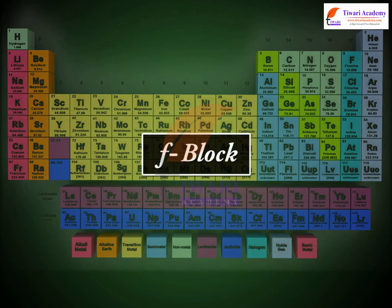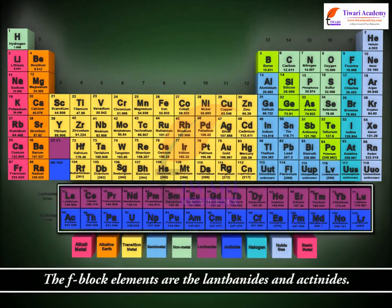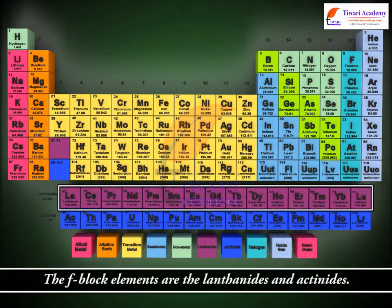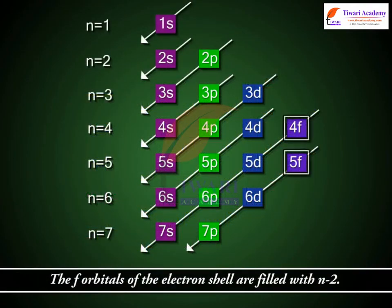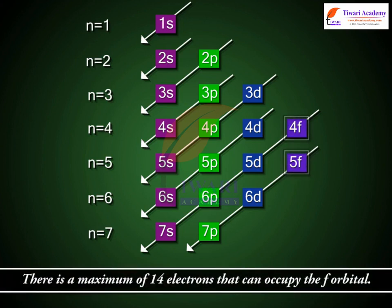F block. The F block elements are the lanthanides and actinides. The F orbitals of the electron shell are filled with n-2. There is a maximum of 14 electrons that can occupy the F orbital.